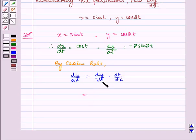This equals minus 2 sin 2t multiplied by 1 over cos t.